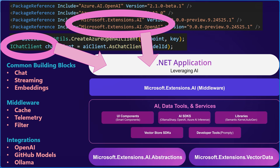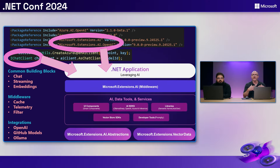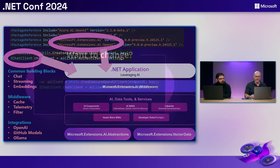We can also add middleware, which is very powerful. ASP.NET Core developers are familiar with configuring a middleware pipeline, and we can do things like add caching so we're not paying the expense of asking the model the same question repeatedly, add telemetry, and even add text filtering. We have integrations with services like OpenAI, GitHub Models for quickly exploring LLMs, and Ollama support for running models locally if you don't want to use the cloud.